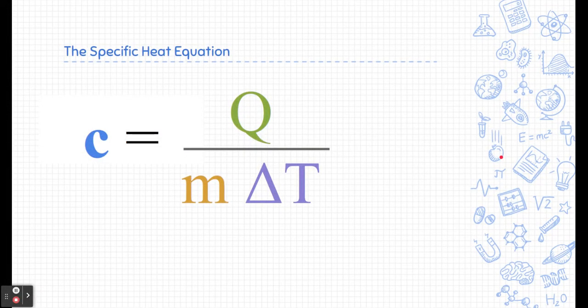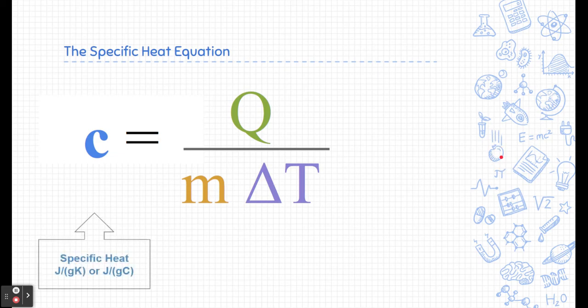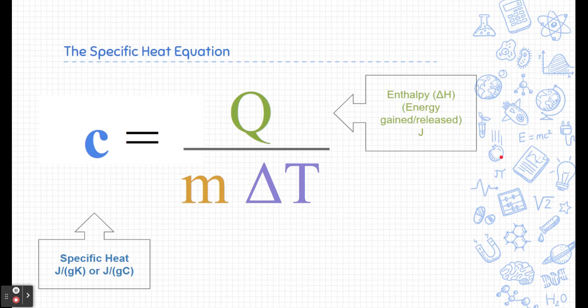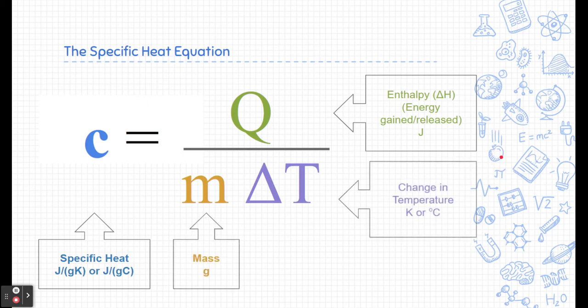This is the specific heat equation. Here on the far left, we see specific heat designated by the lowercase c, measured in joules per gram Kelvin or joules per gram Celsius. Q here is enthalpy. It's the energy gained or released by the substance, and that's a measurement in joules. M is mass, measured in grams. And the change in temperature, delta T, is typically the final temperature minus the initial temperature, and it can either be in Kelvin or Celsius because they both go at the same rates.